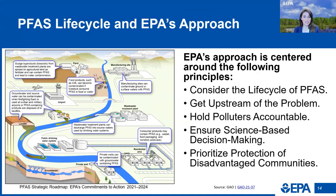The life cycle diagram on this slide shows some of the ways in which PFAS are used and can enter the environment. The major ways PFAS can enter the environment and potentially impact human health include discharges of PFAS pollution from manufacturing facilities, discharges of PFAS-containing firefighting foam, PFAS entering wastewater treatment facilities from upstream sources, and PFAS applied to agricultural fields as a component of biosolids — the solid organic matter left over from the wastewater treatment process.